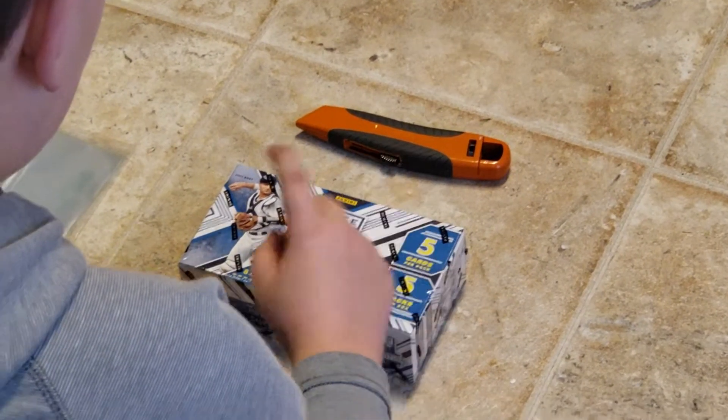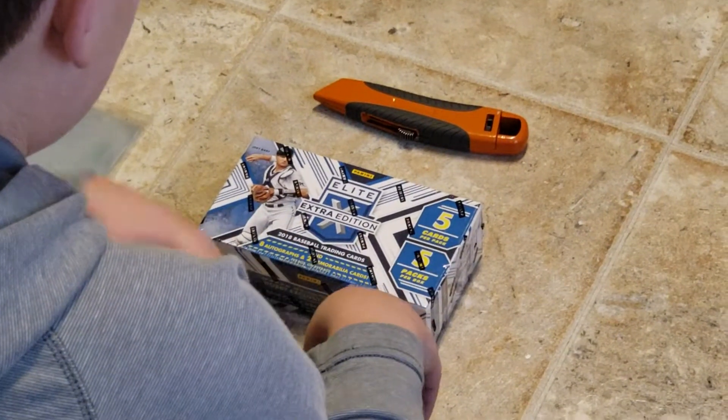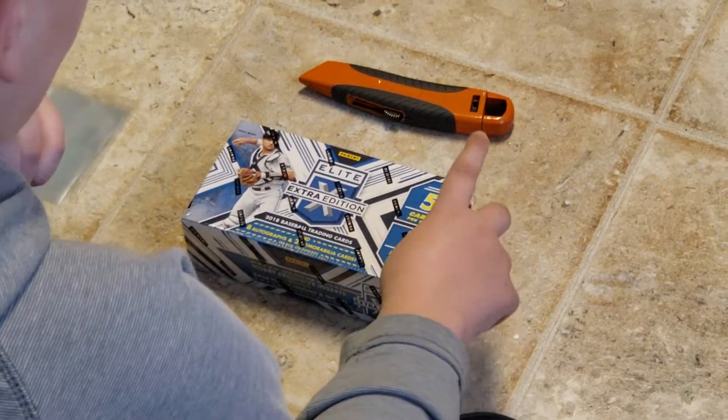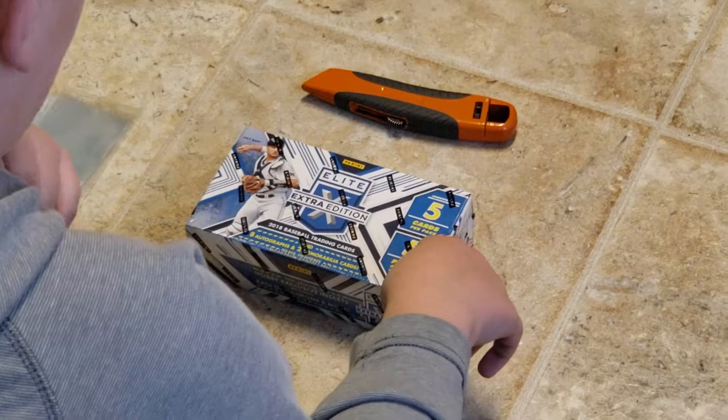This one is Panini Elite. You get 8 autographs and 2 memorabilia cards per box. 2018. 5 cards per pack, 5 packs per box.